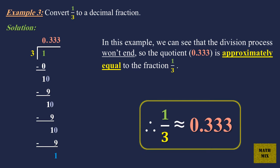Therefore, 1 over 3 is approximately equal to 0.333.